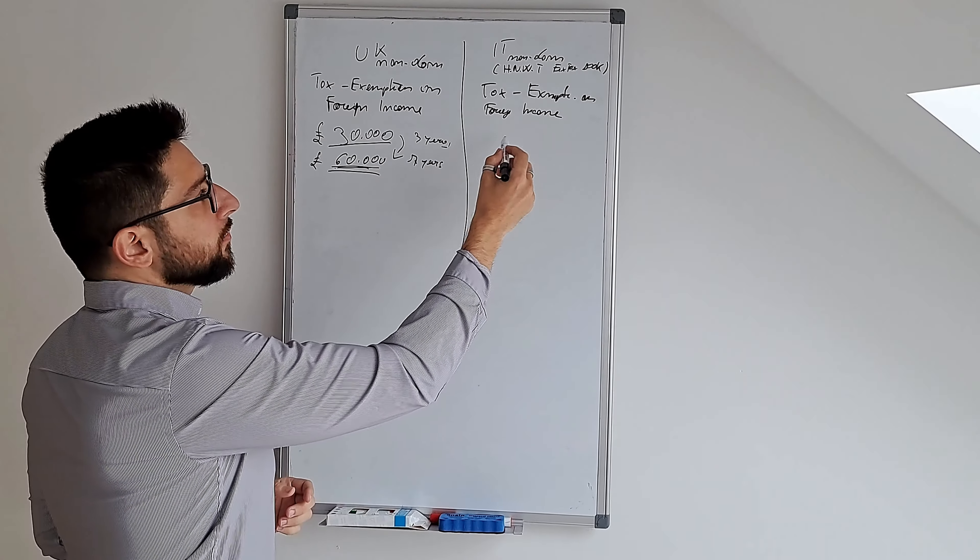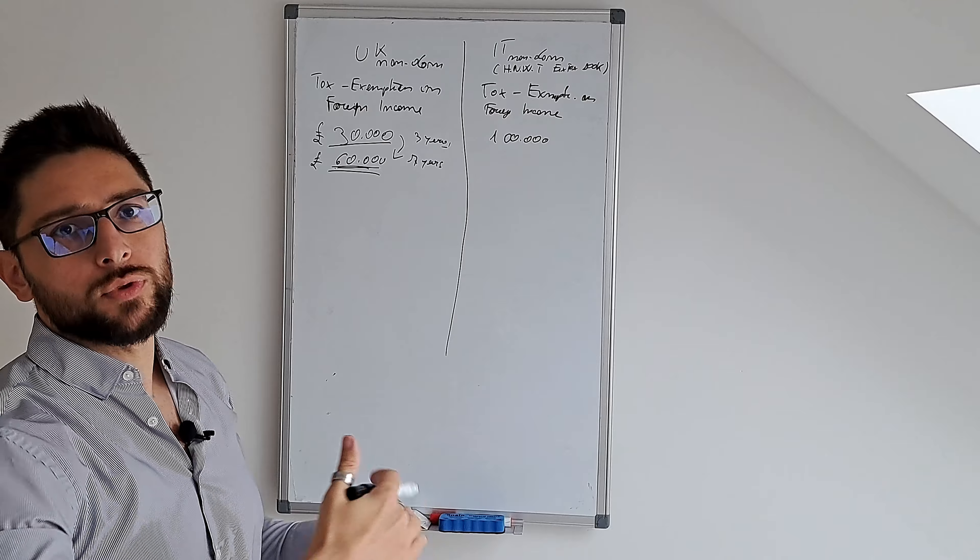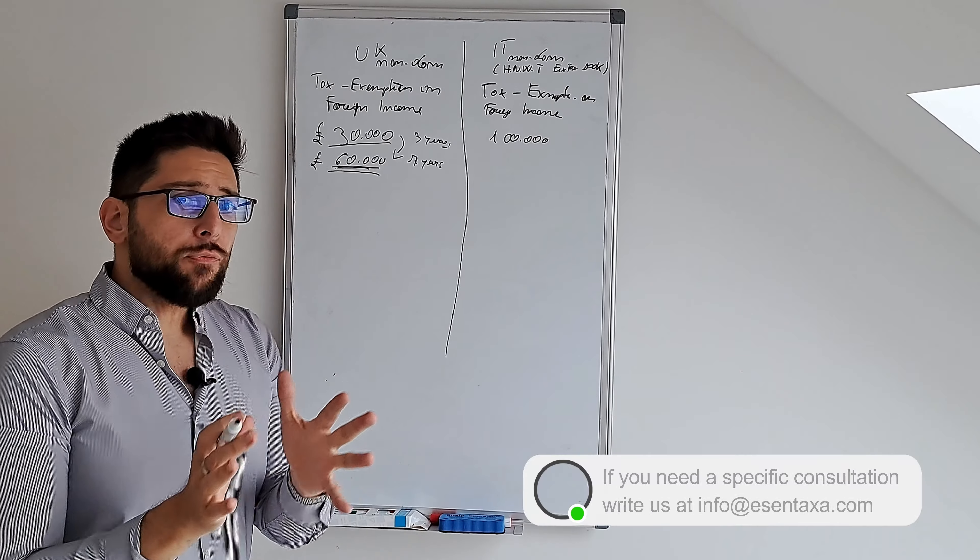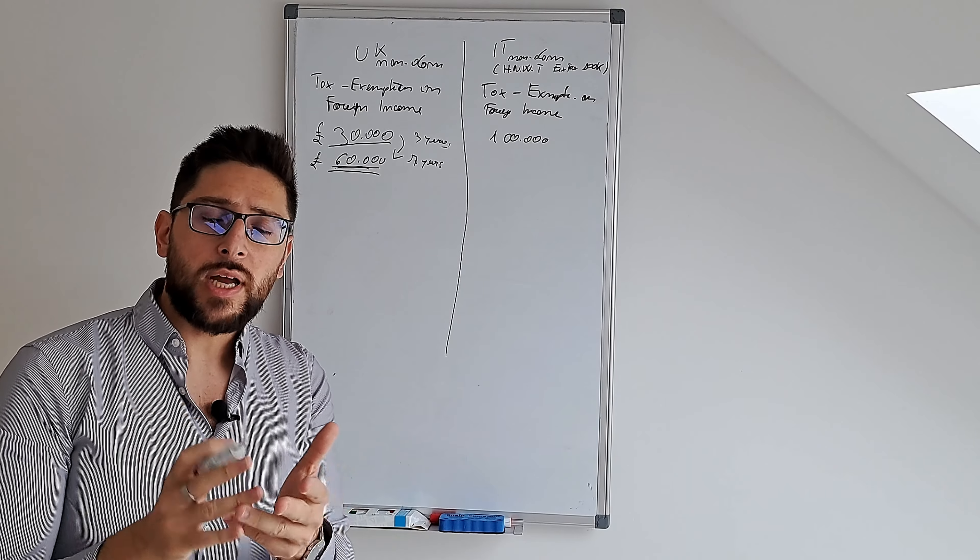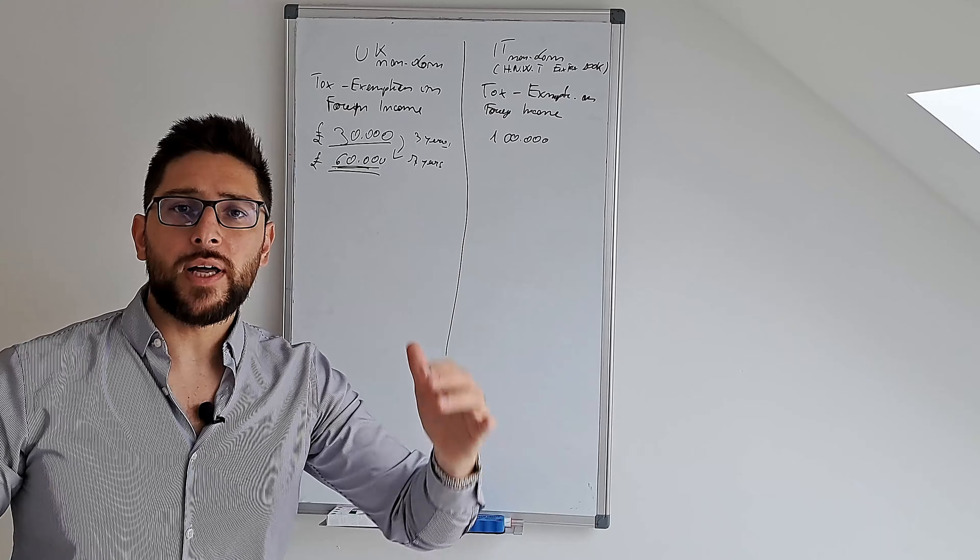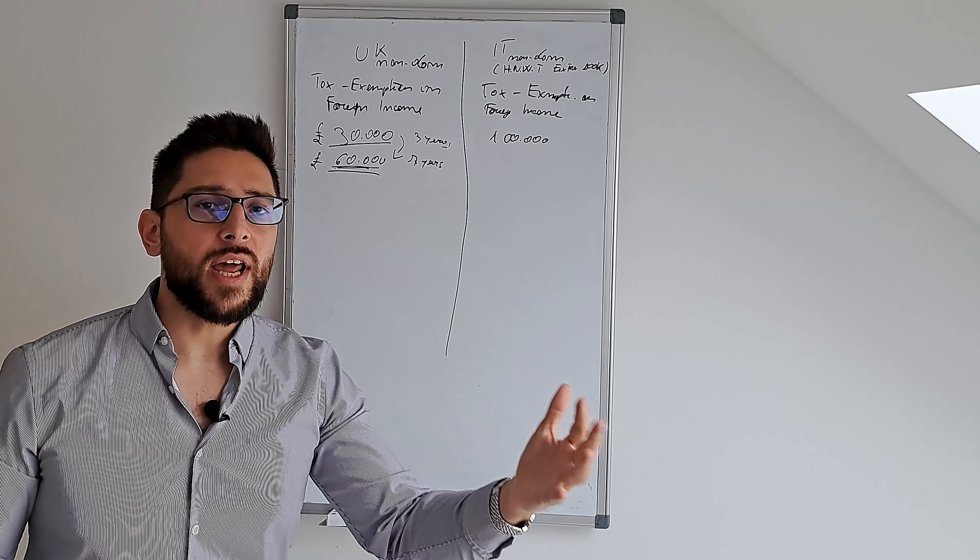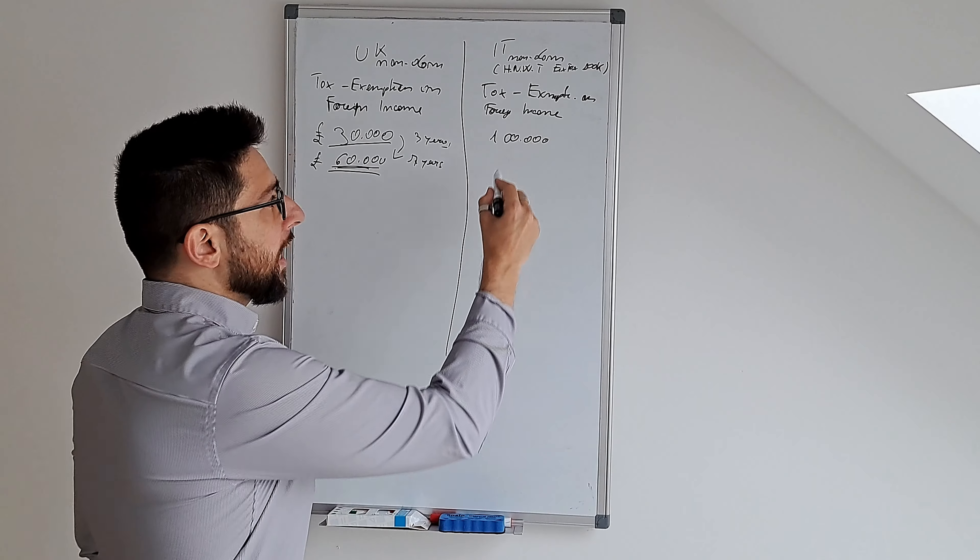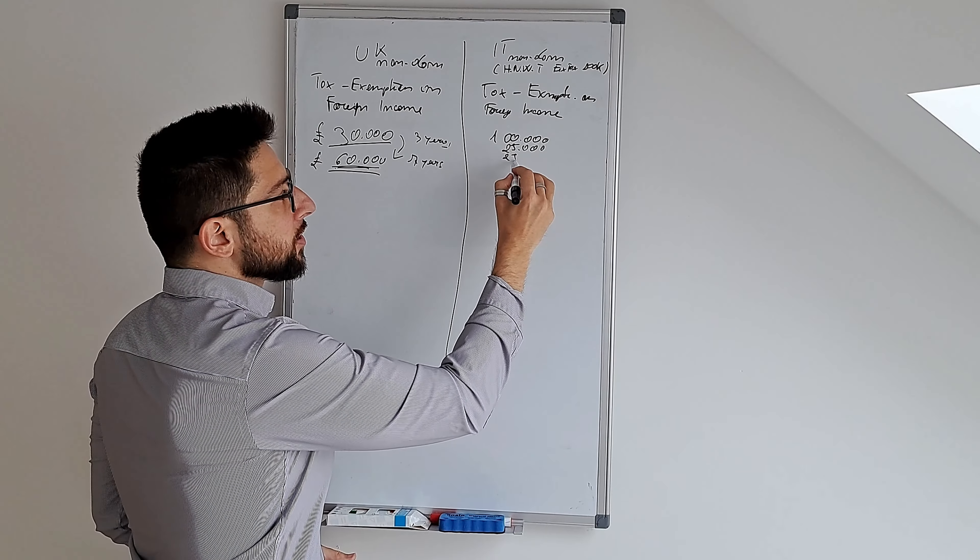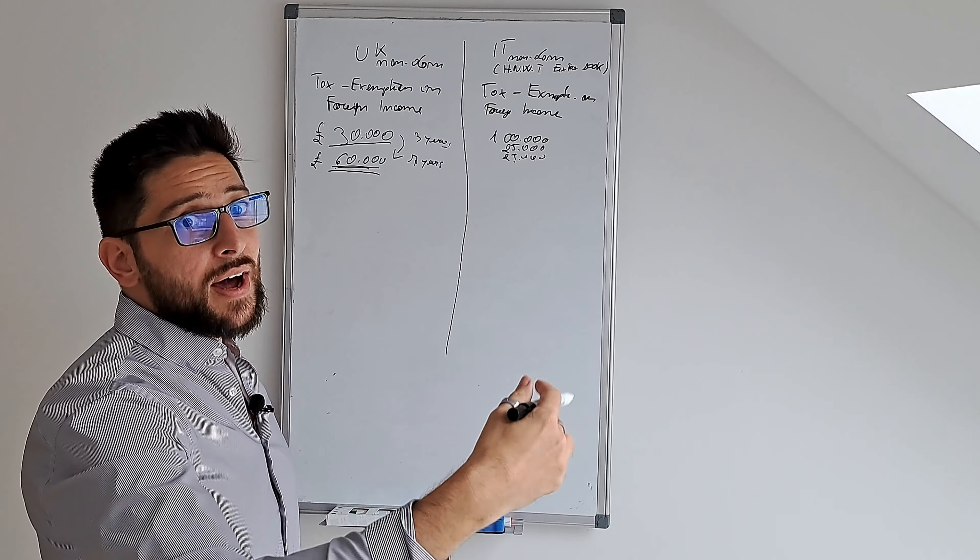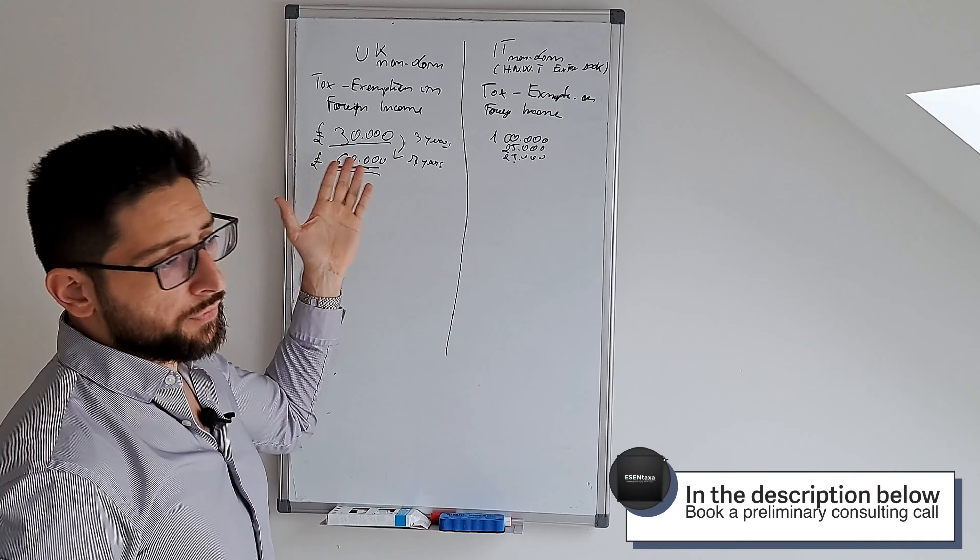This is for each taxpayer applying for this non-dom regime. In the Italian non-dom regime, we have 100,000 euros to pay in exchange of your foreign income not being subject to ordinary taxation. But if you have a member of your family that joins the program with you, such as your father, mother, sister, cousin, child, grandfather, grandmother, grand-aunt - it's a very large meaning, any kind of relative who joins your program - you should just add 25,000 euro for each person that joins the program. So every person that joins pays only 25,000 euro, which is a lot less than the UK amounts.